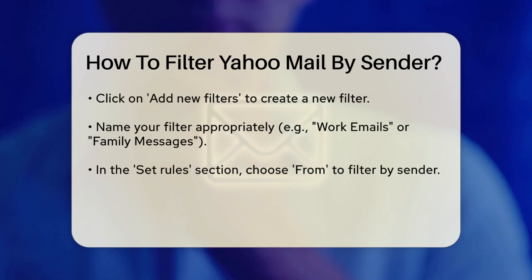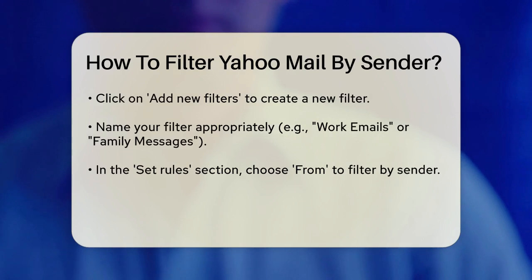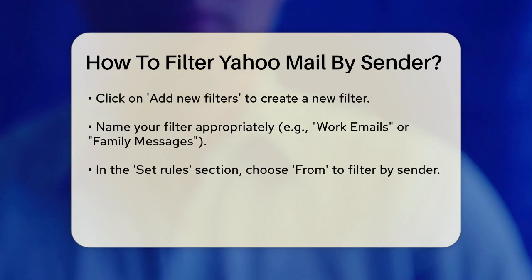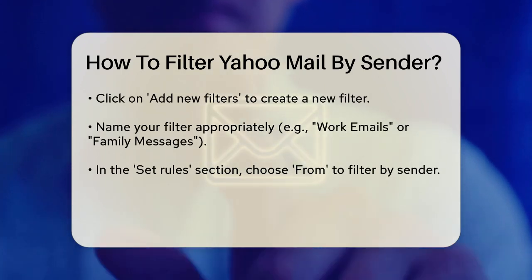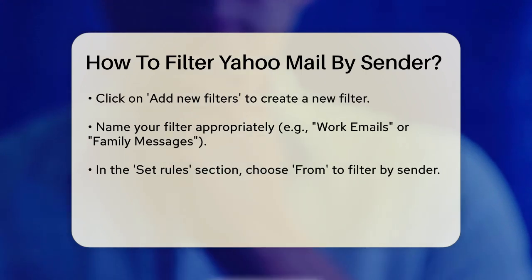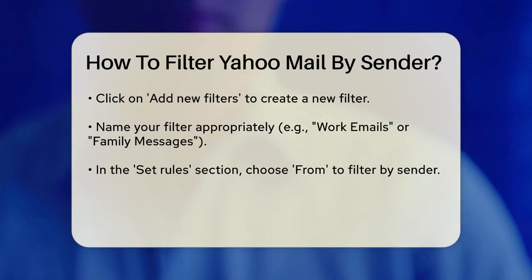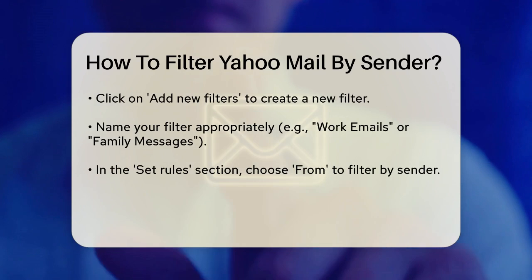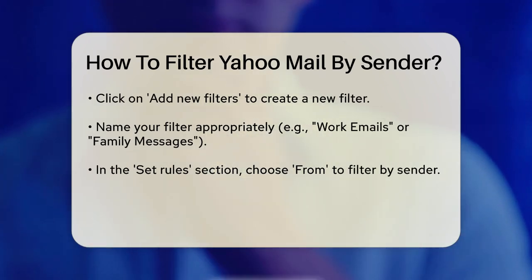Now give your filter a name that makes sense to you, like work emails or family messages. Below the filter name, you'll see the Set Rules section. Here you can specify the conditions for your filter. To filter by sender, select From and enter the email address of the sender you want to filter. You can also add more conditions if needed, such as Subject or Body, but for filtering by sender, From is all you need. Make sure to enter the email address correctly, as this will be the key to your filter.